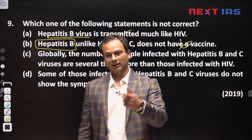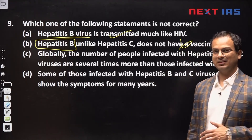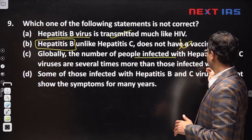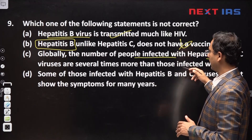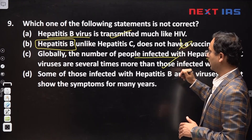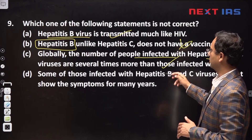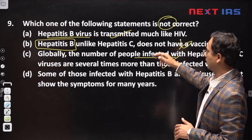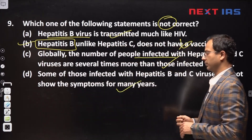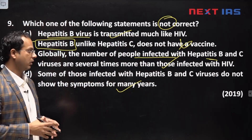Look out for the diseases covered in the Universal Immunization Program. The number of people infected with Hepatitis B and C is many times more than those infected with HIV — this is also true. So the answer to which statement is NOT correct is option B.